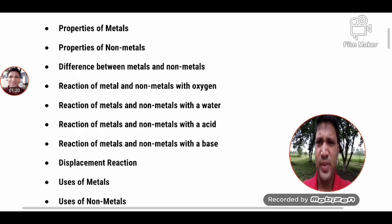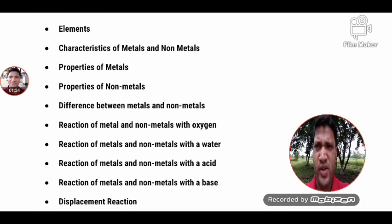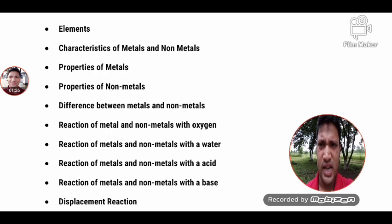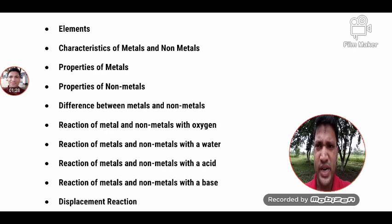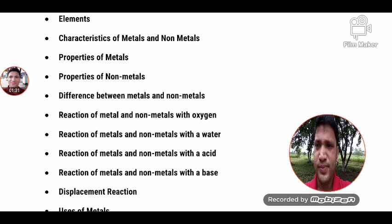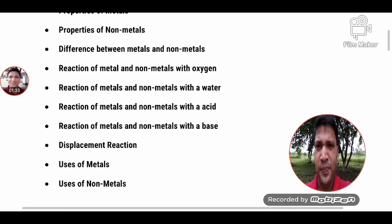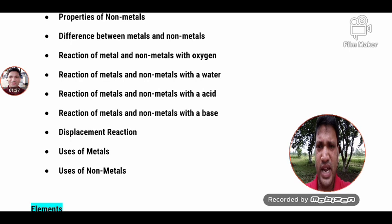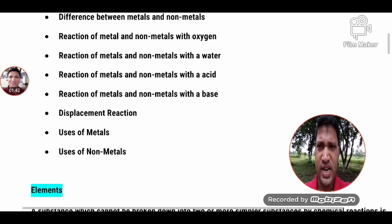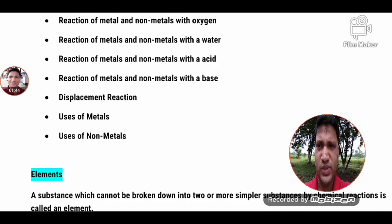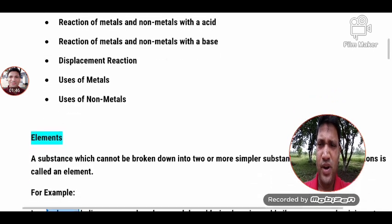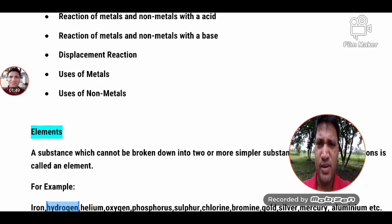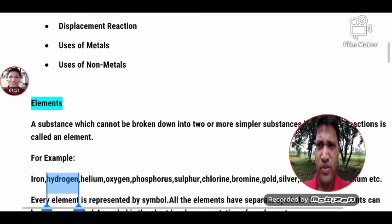So simply, students, in this chapter we will learn metal and non-metal properties — physical properties and chemical properties. For chemical properties we will learn reactions: metal and non-metal with oxygen, then water, then acid, then base. Then we will learn displacement reaction, and at last we will learn uses of metals and non-metals.